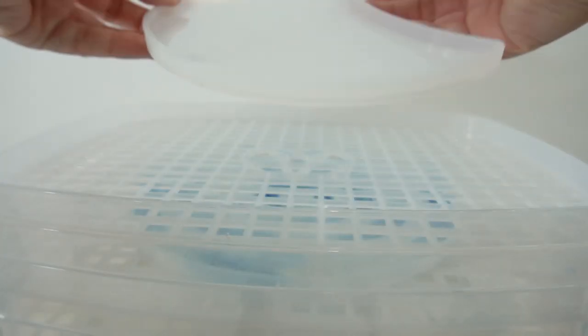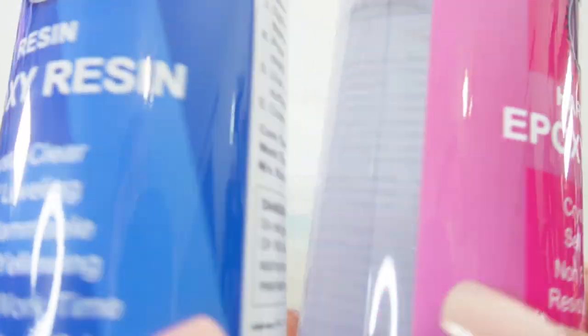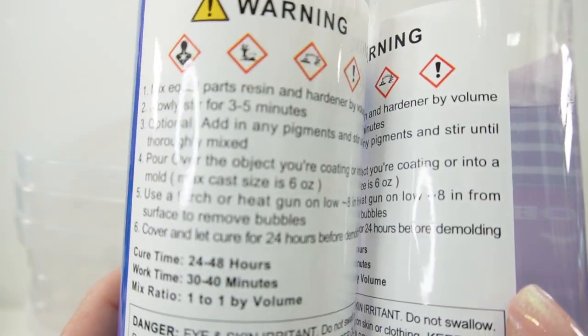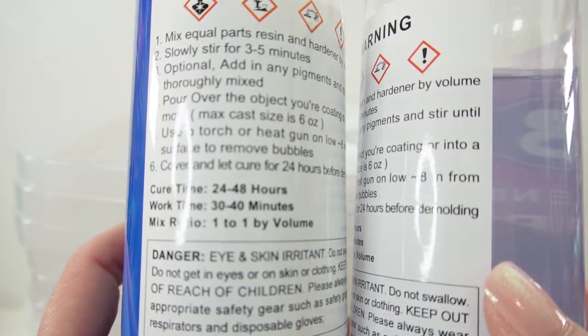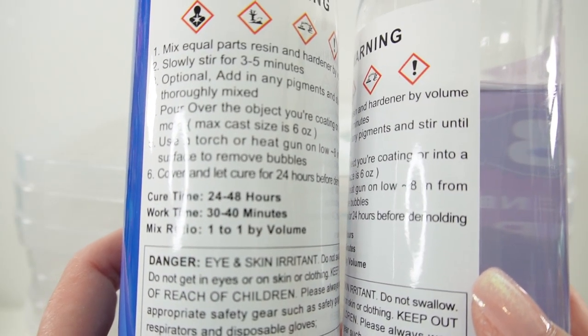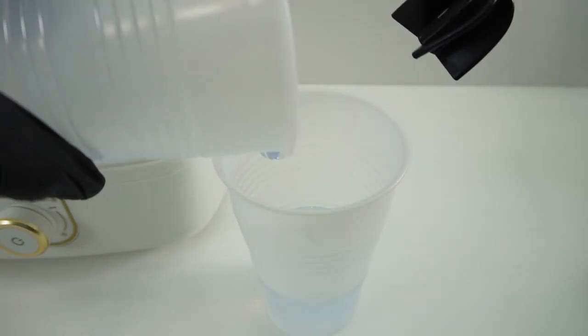Next let's go ahead and mix our epoxy resin. This one is from Tea Expert. We need to stir it for three to five minutes and the working time is 30 to 40 minutes. We do want to mix it one to one by volume.